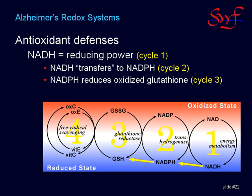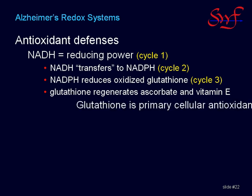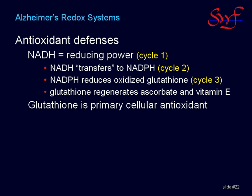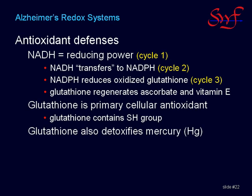Other antioxidants, like vitamin C and vitamin E, rely upon glutathione for their recycling. Glutathione is the primary cellular antioxidant because it contains an SH group. The SH group is its active site for both its antioxidant activity and its mercury binding activity.